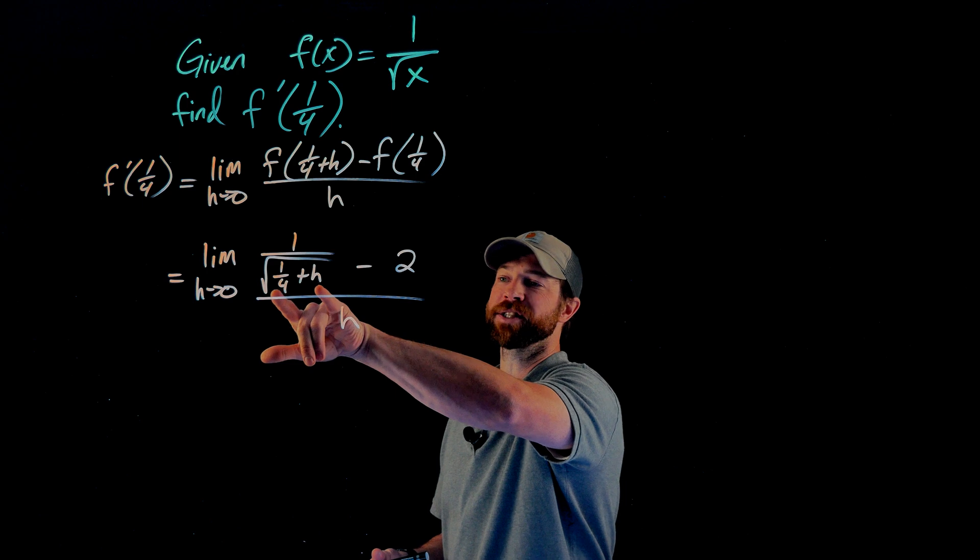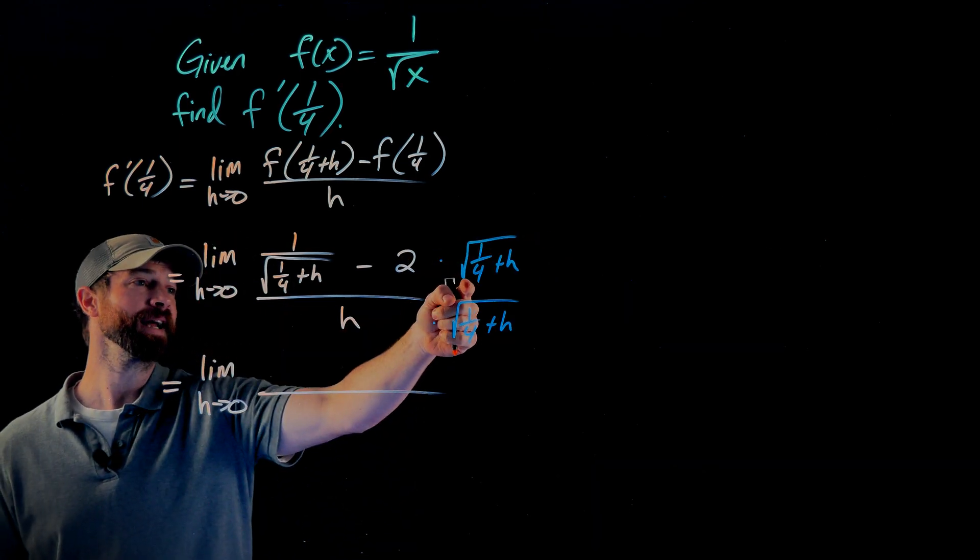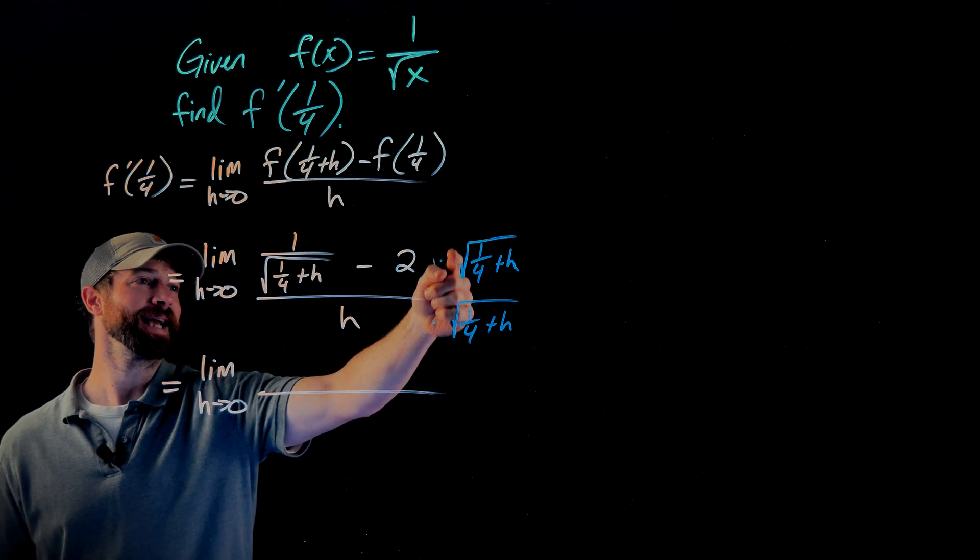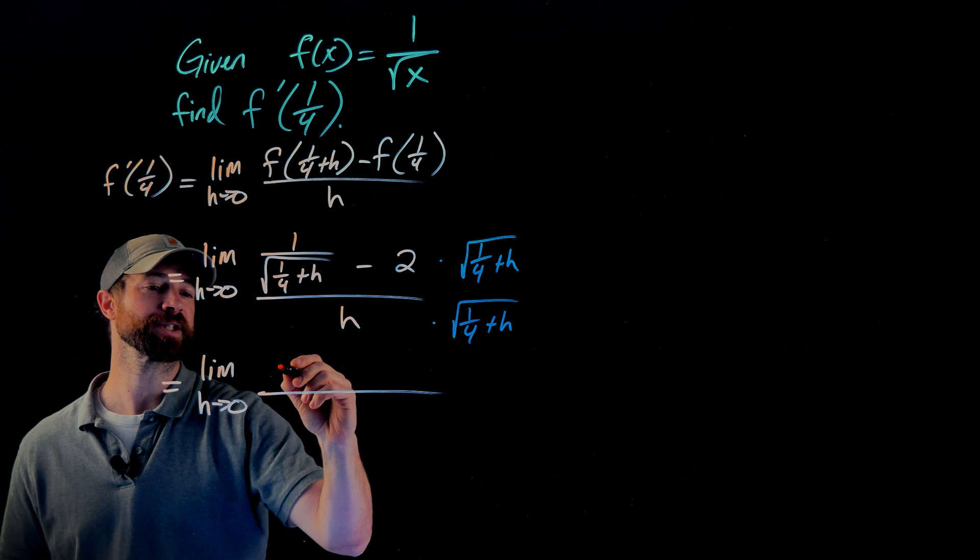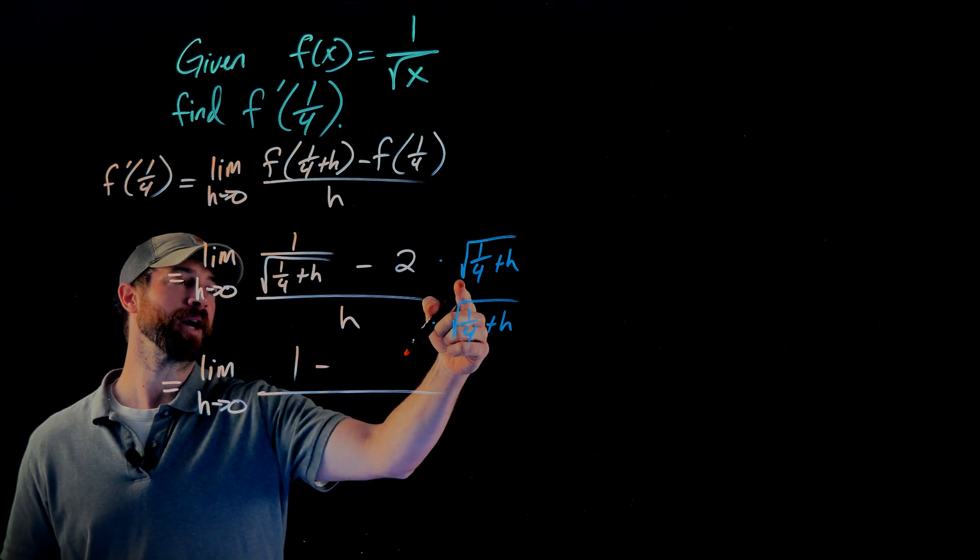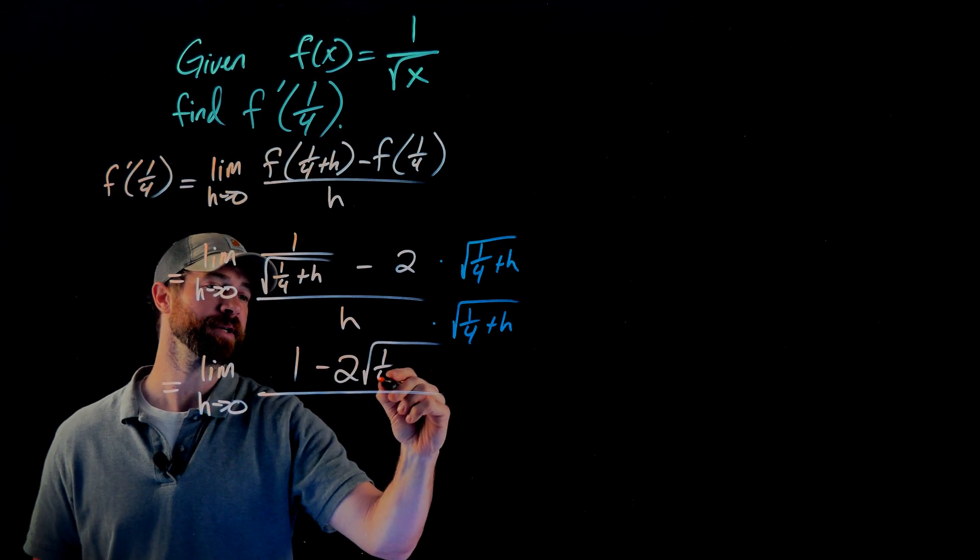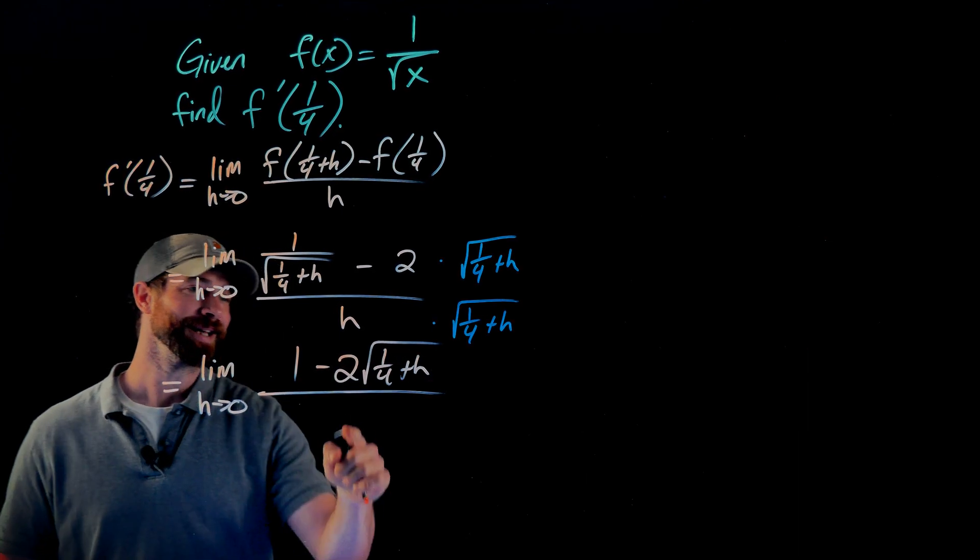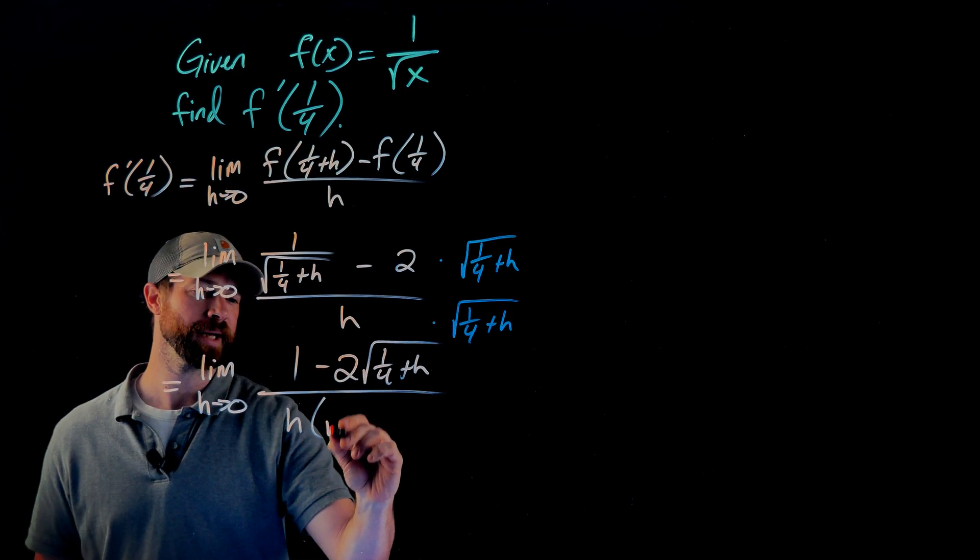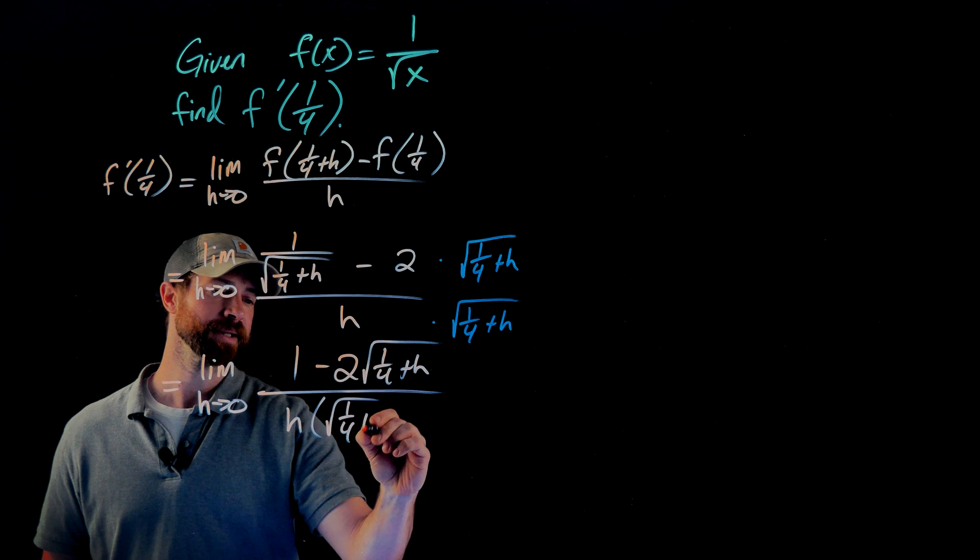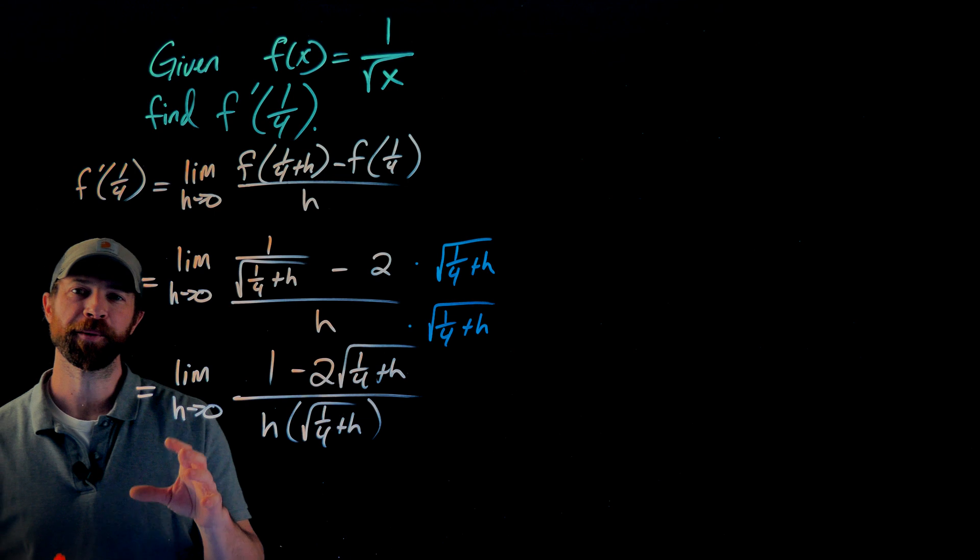What I'm going to do is multiply by this square root of 1/4 plus h. When I multiply both of these terms by the square root of 1/4 plus h, when I first multiply it here, I just cancel that denominator out. So this just becomes a 1. And then in this second term, I'm just going to get 2 times this square root of 1/4 plus h. In the denominator here, I'm not going to multiply this out. There's really nothing to do anyways, I'm just going to multiply this h by the square root of 1/4 plus h.